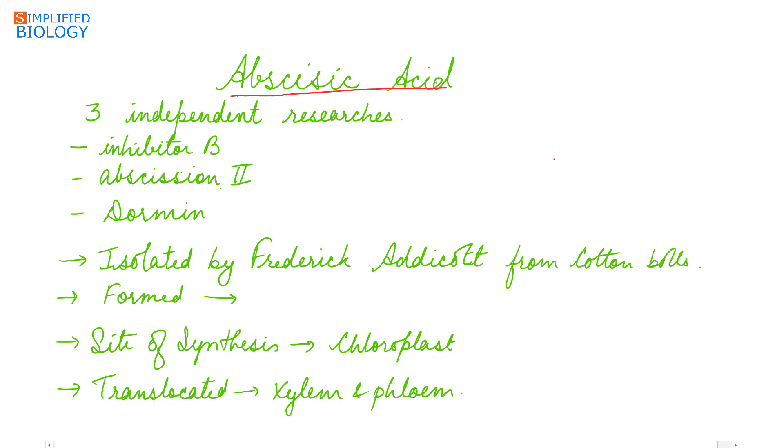Abscisic acid was discovered by three independent researchers separately, and each of them gave it a separate name. It was referred to as inhibitor B, abscission 2, and dormin. Later it was seen that these substances were chemically identical.